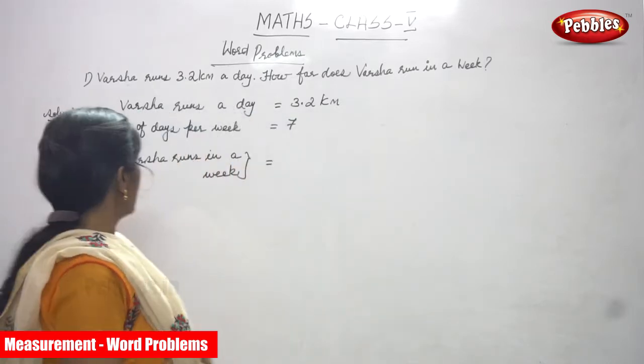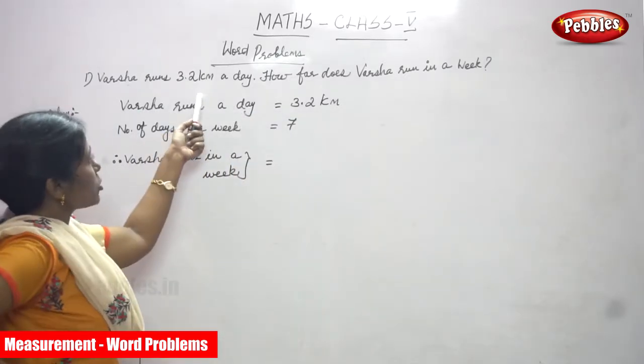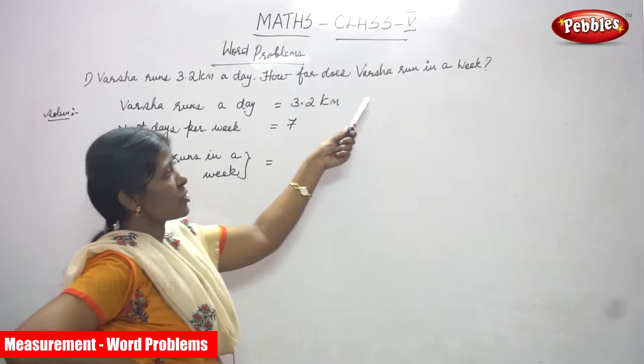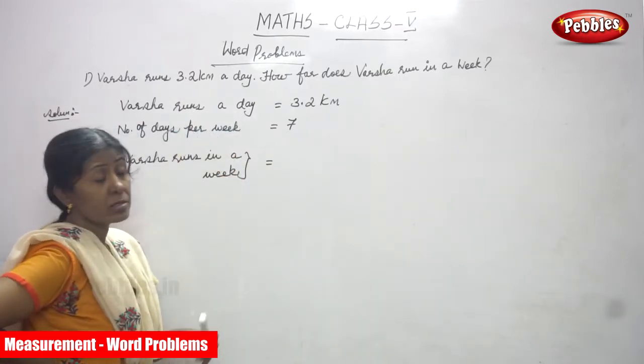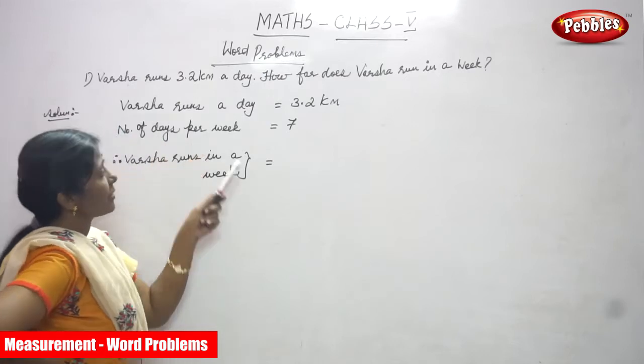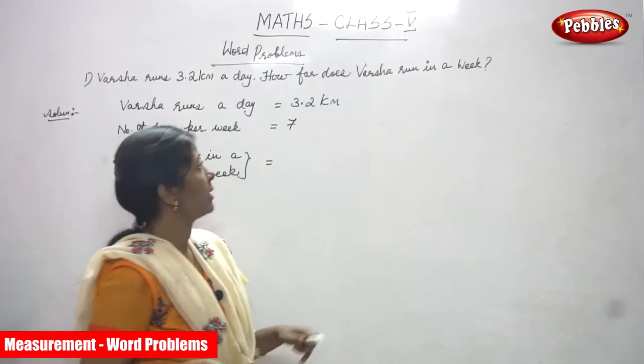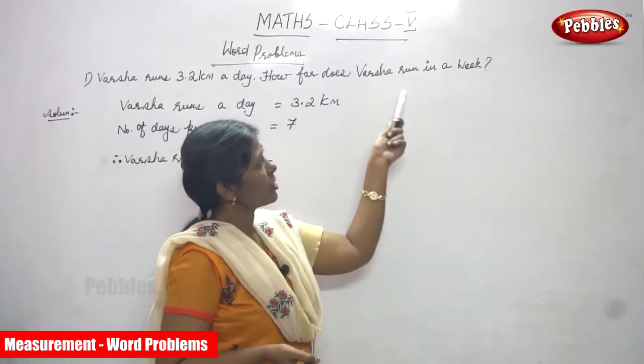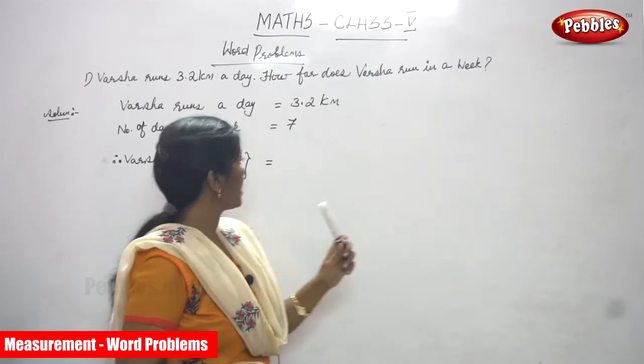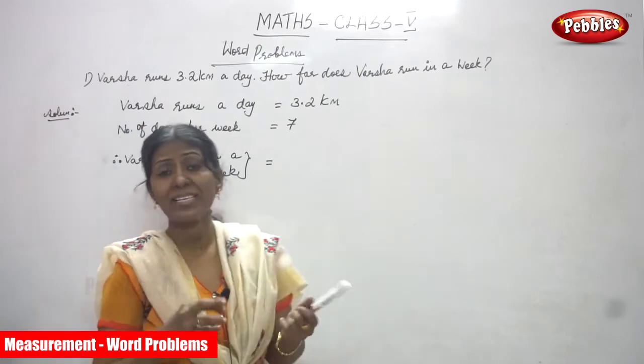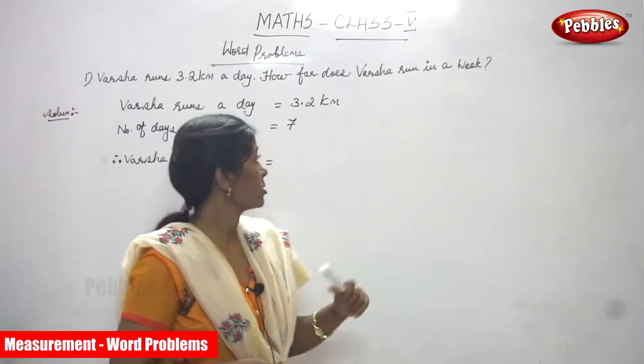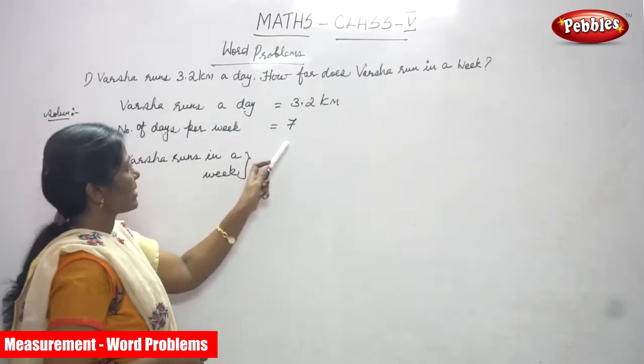Let's start the problem right now. Varsha runs 3.2 km a day. How far does Varsha run in a week? Every day she runs 3.2 km. The number of days per week - how many days per week? 7 days. That is what we have written, number of days per week is 7.